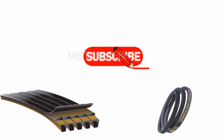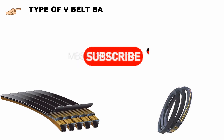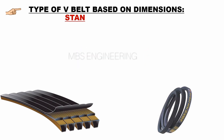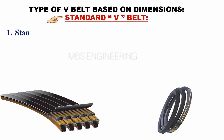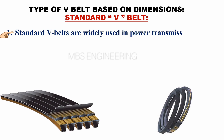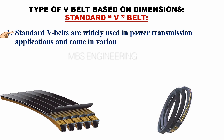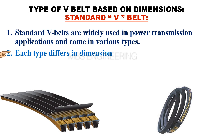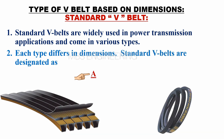We will learn and understand the types of V-belt based on dimensions. The first type is the standard V-belt. Standard V-belts are widely used in power transmission applications and come in various types. Each type differs in dimensions. Standard V-belts are designated as type A, type B, type C, type D, type E, and type Z.